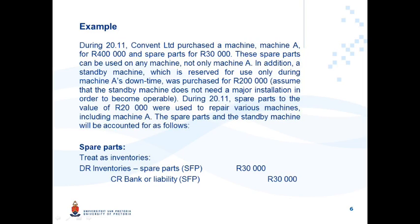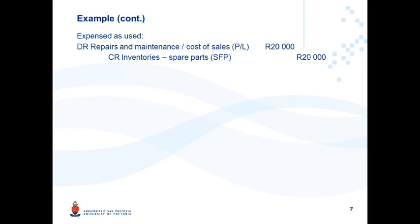Regarding the spare parts: these spare parts do not meet the definition of Property Plant and Equipment. Their intention is not to be held for more than one period — they are used to repair various machines, so ultimately they fall under repair costs of the entity. Therefore, when these costs were incurred, they were classified as Inventories, not PPE, with a corresponding credit to bank or liability for 30,000 Rand. When the 20,000 Rand spare parts were actually used for repair purposes, an amount was expensed to the statement of profit or loss, with a debit to repairs and maintenance or cost of sales and a credit to the Inventory Spare Parts Account.